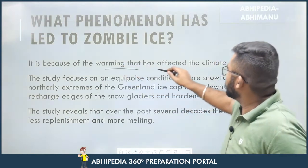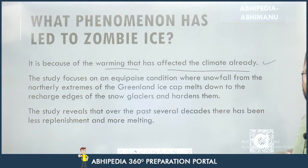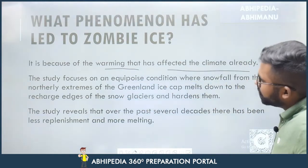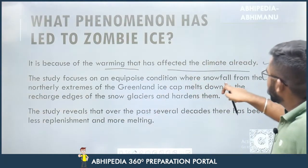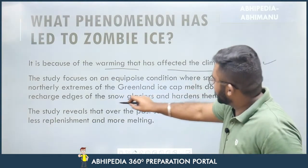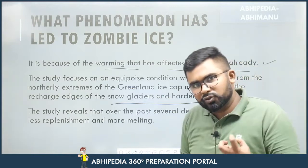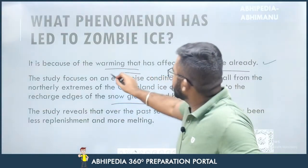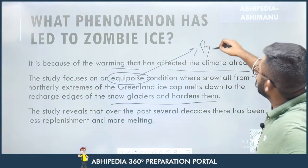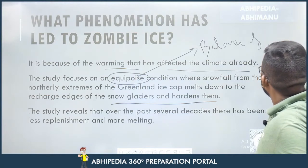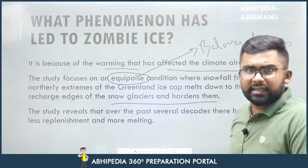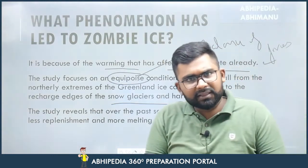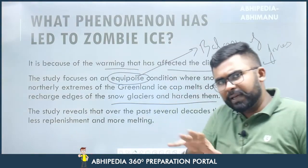Number one cause is the warming that has already affected the climate. The study focuses on an equipoise condition where snowfall from the northerly extremes of the Greenland ice cap melts down to recharge the edges of the snow glaciers and hardens them. The edges melt down and refreeze — that is how the equilibrium is maintained. Equipoise means a balance of forces: how much is melting down and how much is accumulating and hardening at the edges.